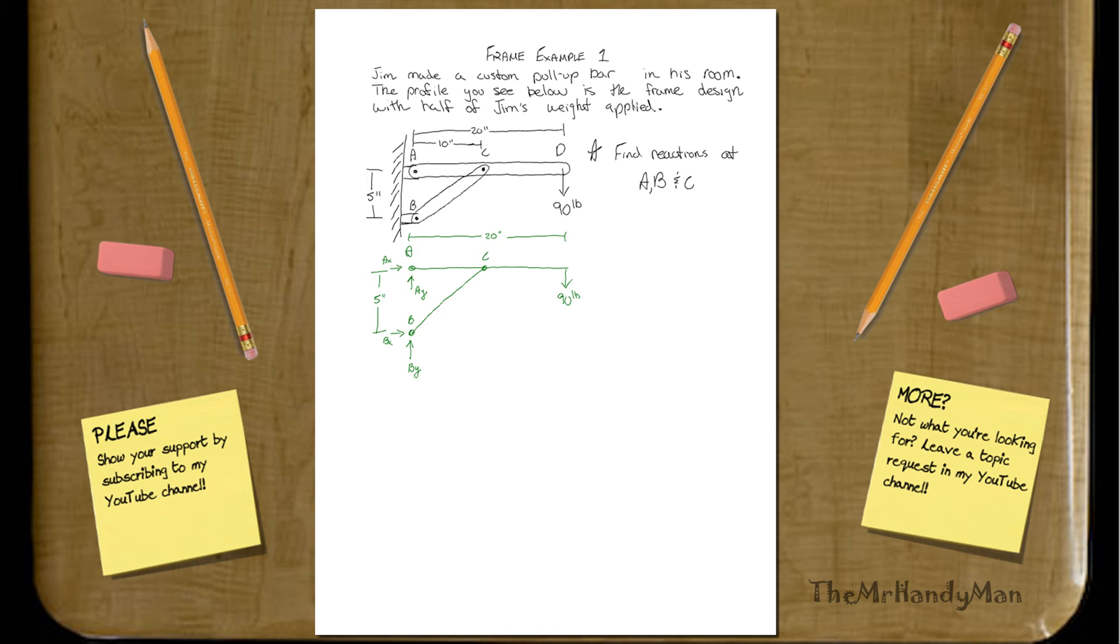So let's do, I say we do a moment about A. That will take a few things out. So if we do the moment about A, what we'll find is that B_X times 5 minus 90 pounds times 20 equals 0. That's all that's resulting from that. You can solve for B_X at that point, 360 pounds. Good.